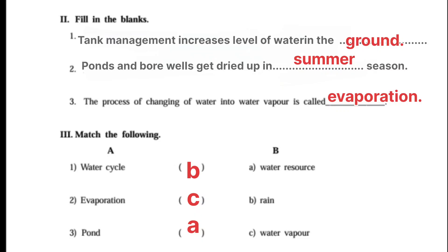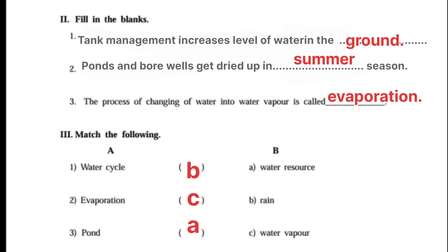Next, third one: Match the following. Water cycle — B Rain. Evaporation — C Water vapor. Pond — A Water Resources. Next: Draw and color. Draw the water cycle and color it.